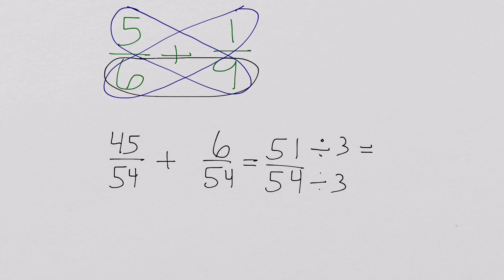So 51 divided by 3 is 17. 54 divided by 3 is 18. So we end up with the reduced fraction of 17 18ths.